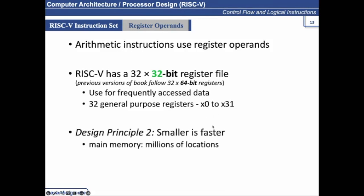So the design principle number two, which is being followed in this RISC-V architecture, is smaller is faster. We could choose to have more than 32 registers, maybe 64, 128, or 512. But keeping the number less will help us perform operations faster.